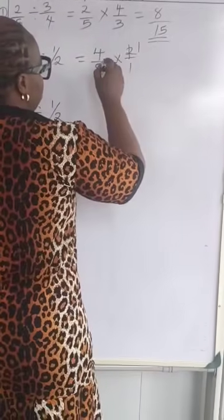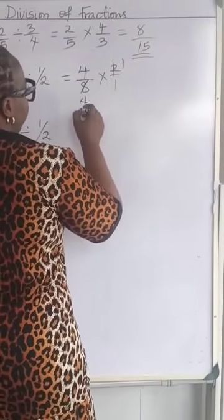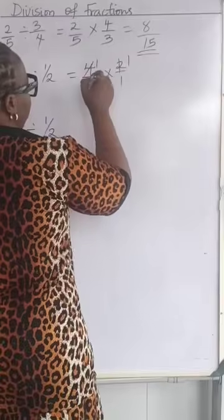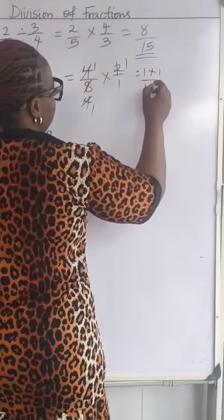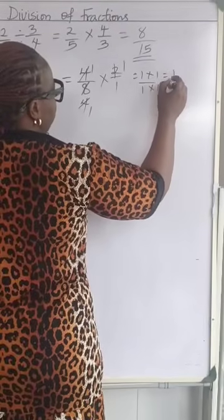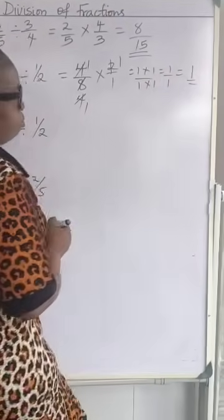Because 2 is here, and 2 here is what? 4. And 4 can cancel here to be 1 over 1. So we have 1 times 1 over 1 times 1, which will give us 1 over 1 and is essentially the whole number 1.